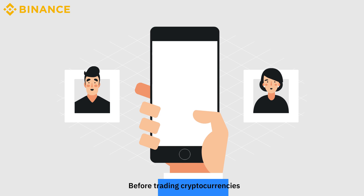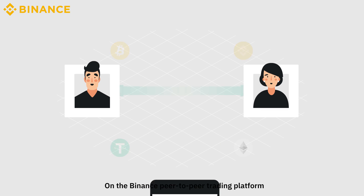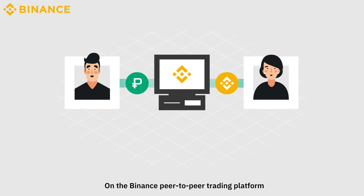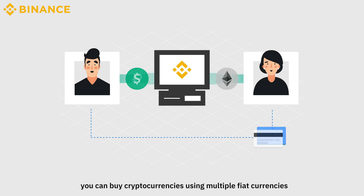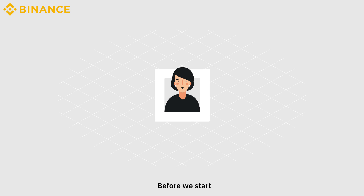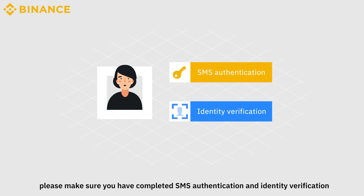Before trading cryptocurrencies, you need to buy cryptocurrencies first. On the Binance Peer-to-Peer Trading Platform, you can buy cryptocurrencies using multiple fiat currencies in various payment methods. It's super simple. Before we start, please make sure you have completed SMS authentication and identity verification.